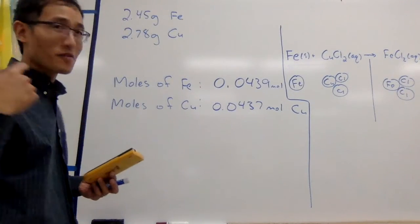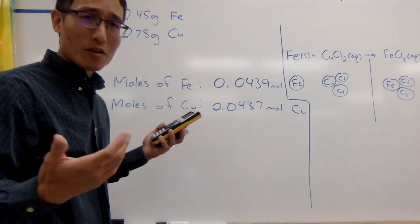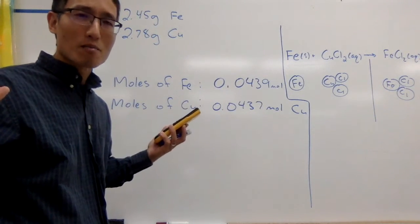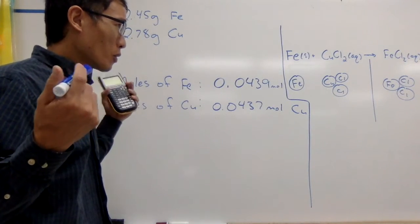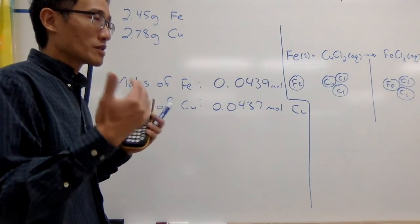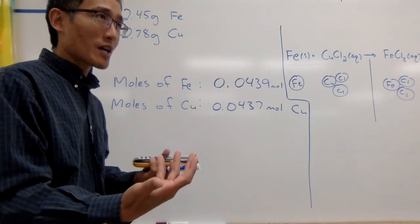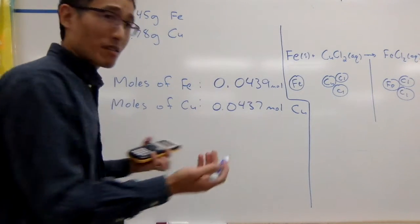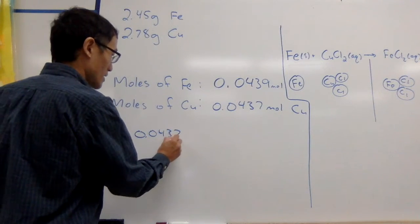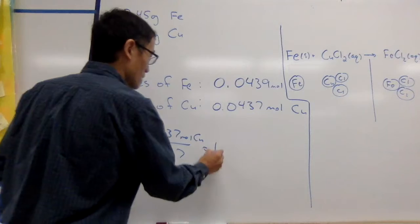We have moles of iron and moles of copper, and we want to compare them. Just by looking, they're pretty close — pretty even, about a one-to-one ratio. But if we had numbers that were a little different, how can we do that mathematically? I want to compare everything to one, so I need to make one of these numbers one. The way to do that is to divide by the smallest number — in this case, 0.0437 moles of copper — and dividing it by itself gives me one for copper.